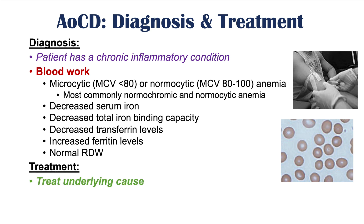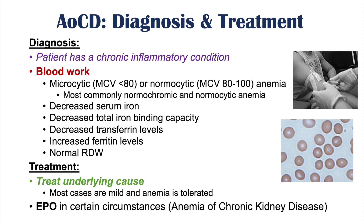Treatment of anemia of chronic disease is primarily about treating the underlying cause. If it's diabetes, improving glucose control is important. If it's an autoimmune condition, controlling the inflammatory state is key. Most cases are mild and the anemia is tolerated, so treating the underlying cause will do more for the patient than anything else. Erythropoietin or EPO can be given in certain circumstances, such as in anemia of chronic kidney disease where the patient is not producing enough EPO.